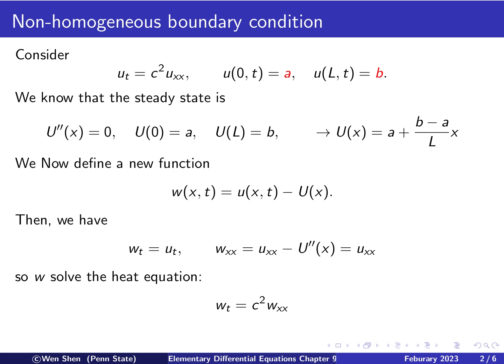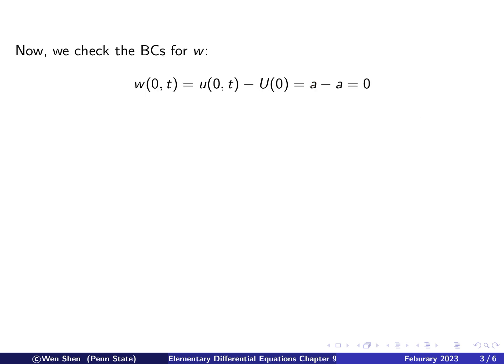So what is different from u? Well, the boundary conditions will be different. So let's check. At x equals zero, W(0,t) will equal u(0,t) minus capital U at zero. So that's the boundary condition for u at zero, which is a, and for capital U at zero. So probably you see where we are going. Next, check at the point x equal l. The boundary condition for W will be the one for u minus the one for capital U, which is b minus b, and then it's zero. So we see that the boundary conditions for W are homogeneous.